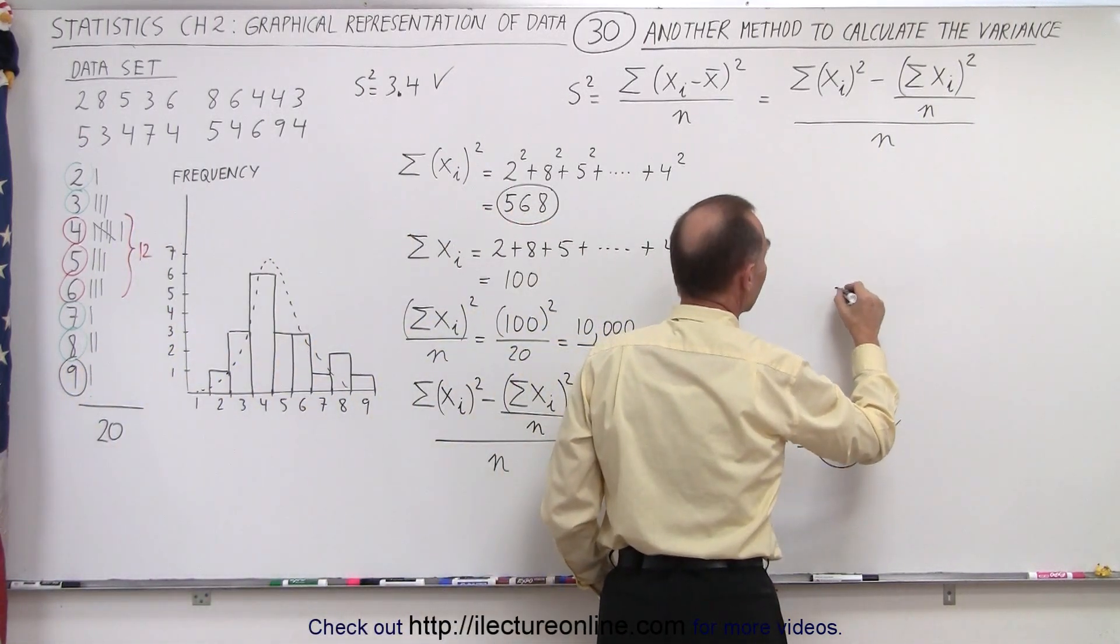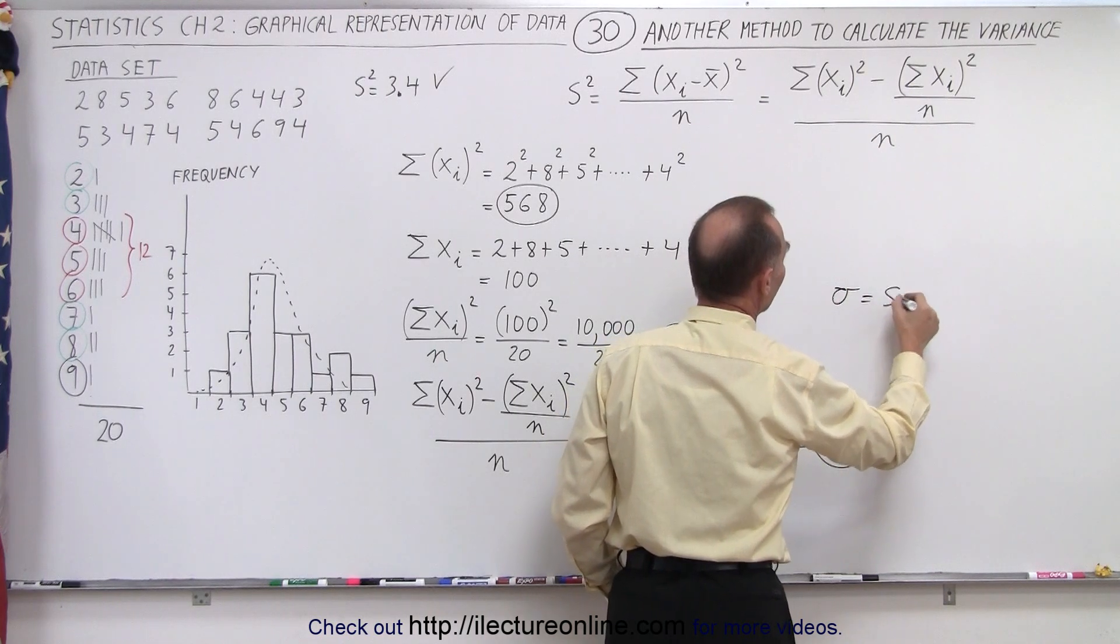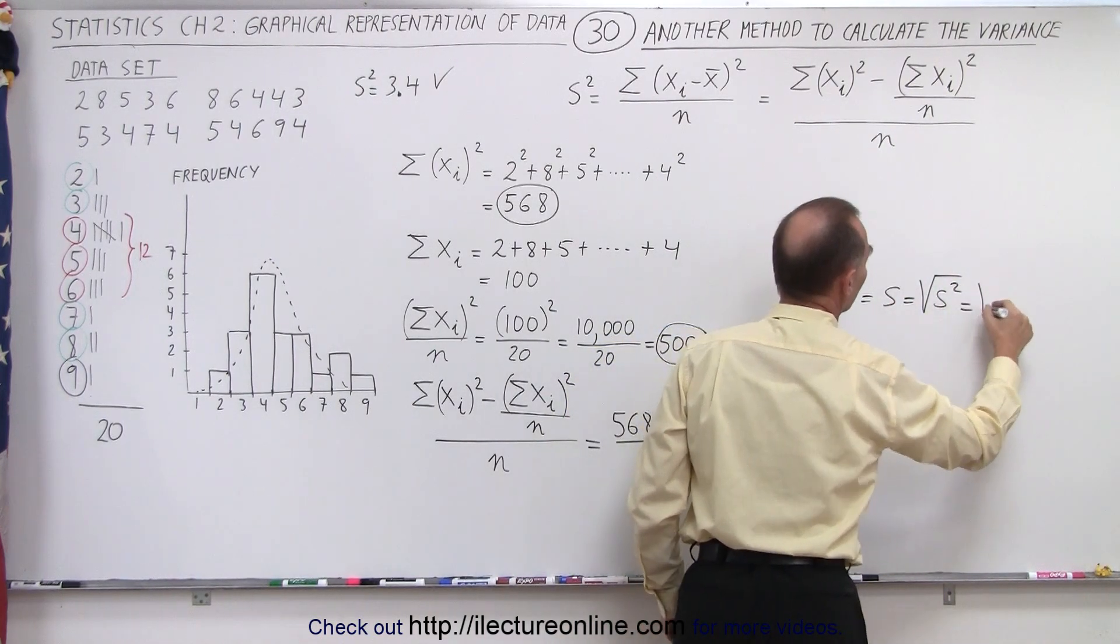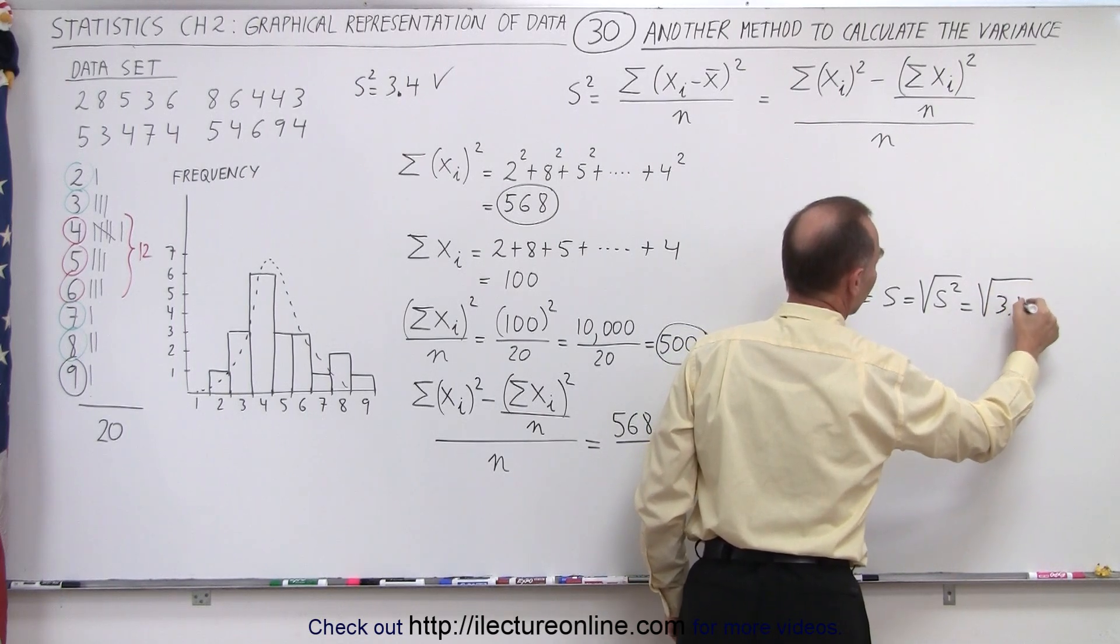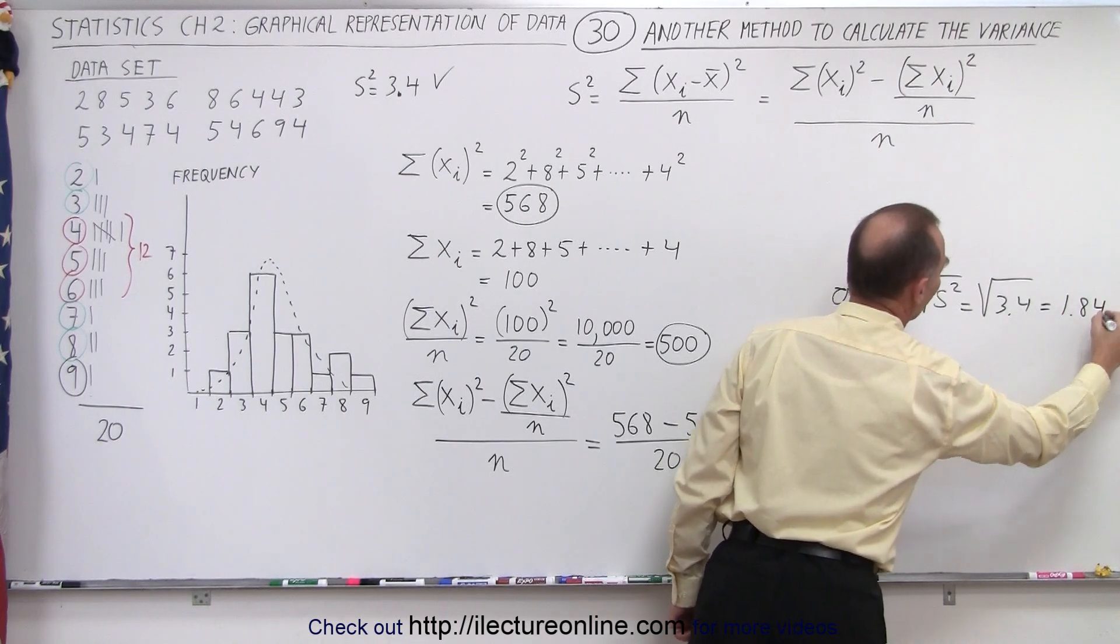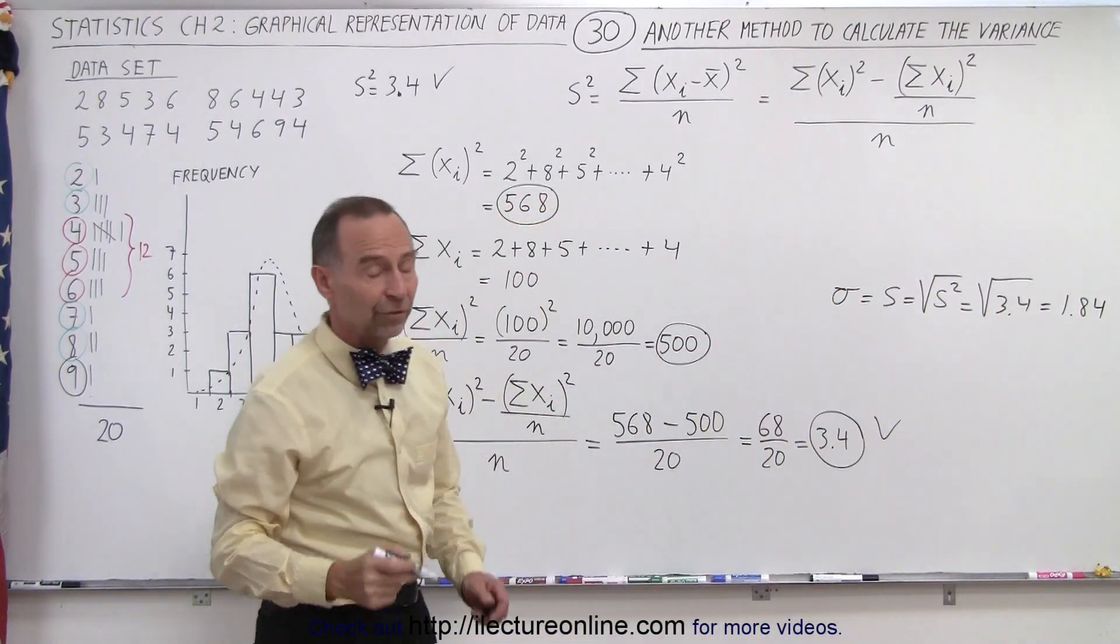And then of course, when you want to find the standard deviation, which is s, the square root of s squared, that would be equal to the square root of 3.4, and that gives us the same value, 1.84, which we got in the previous video.